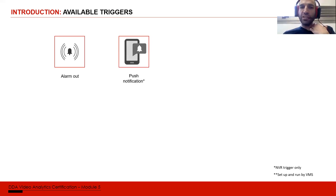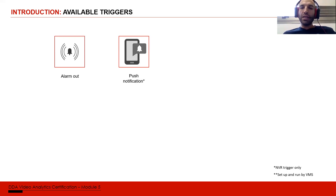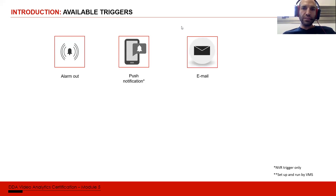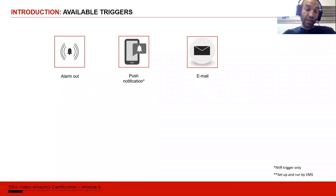Push notification goes to the mobile phone via the Provision mobile app. Push notification is currently only supported by NVRs, and we know there is a lot of demand to add it to IPC and VMS as well — we'll add it later. Email is the older generation of notifications and is supported by all platforms: NVRs, DVRs, VMS, and IP cameras.